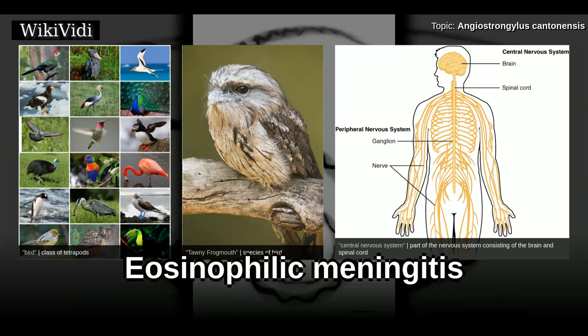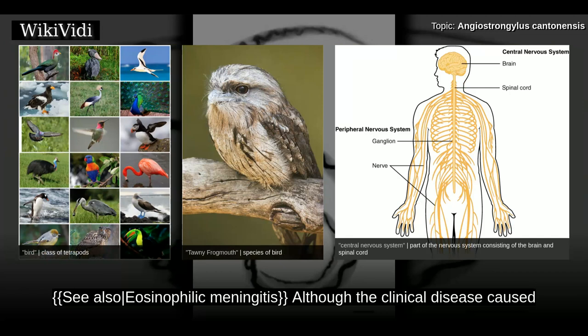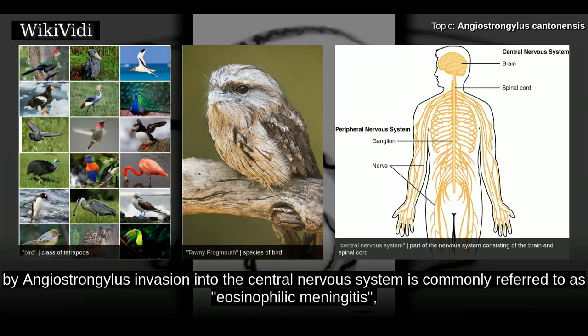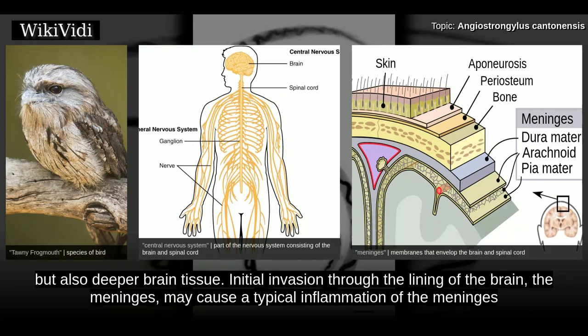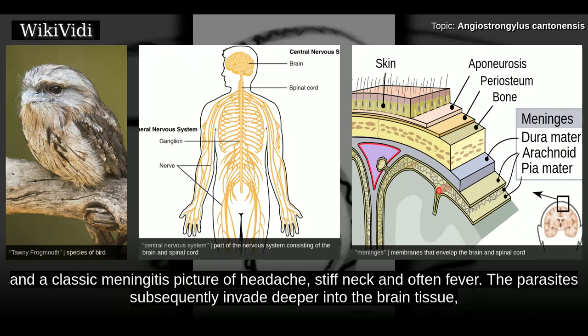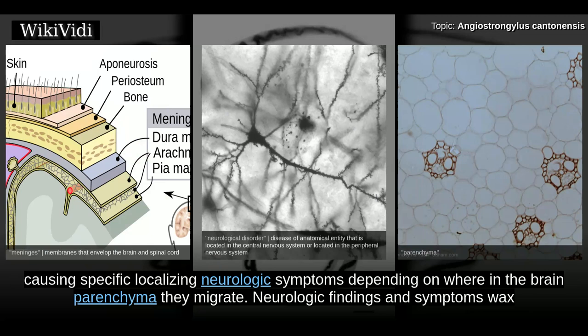Eosinophilic Meningitis. Although the clinical disease caused by Angiostrongylus invasion into the central nervous system is commonly referred to as eosinophilic meningitis, the actual pathophysiology is of a meningoencephalitis with invasion not just of the meninges, or superficial lining of the brain, but also deeper brain tissue. Initial invasion through the meninges may cause typical inflammation and a classic meningitis picture of headache, stiff neck, and often fever. The parasites subsequently invade deeper into the brain tissue, causing specific localizing neurologic symptoms depending on where in the brain parenchyma they migrate.